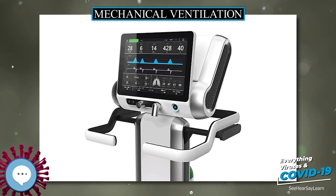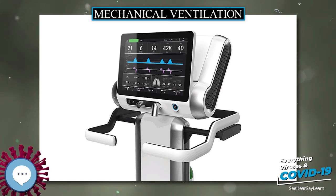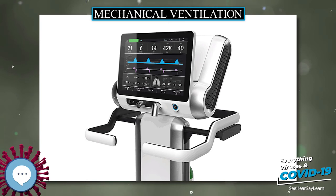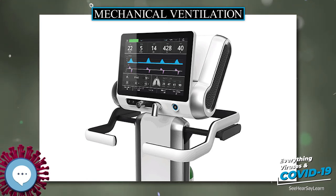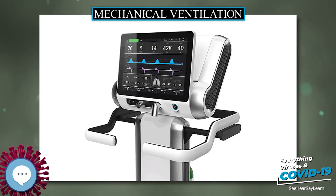Mechanical ventilation utilizes several separate systems for ventilation referred to as the mode. Modes come in many different delivery concepts but all modes fall into one of three categories: volume cycled, pressure cycled, or spontaneously cycled. In general, the selection of which mode of mechanical ventilation to use for a given patient is based on the familiarity of clinicians with modes and the equipment availability at a particular institution.